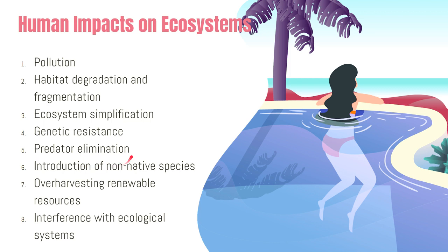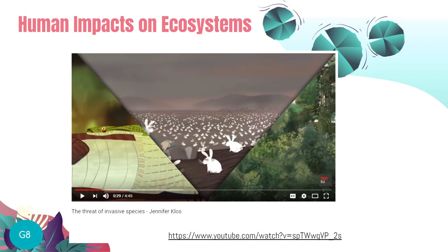Additional impacts include predator elimination, introduction of non-native species, over-harvesting of renewable resources, and interference with ecological systems. I will be recommending a lot of videos for you to watch that will emphasize how human activities greatly and negatively impact a balanced ecosystem.